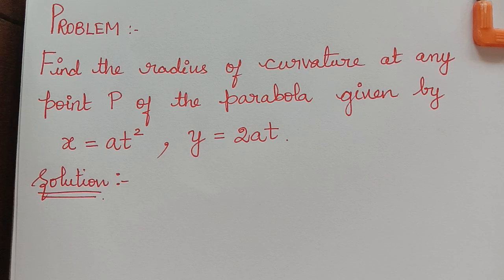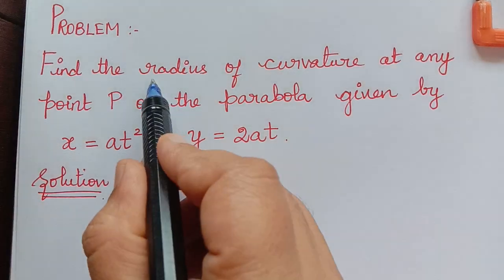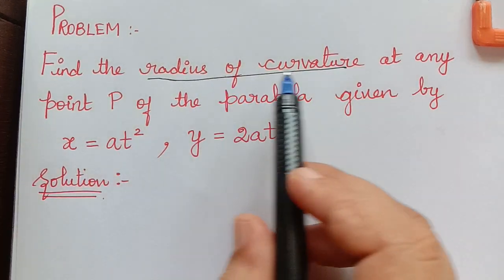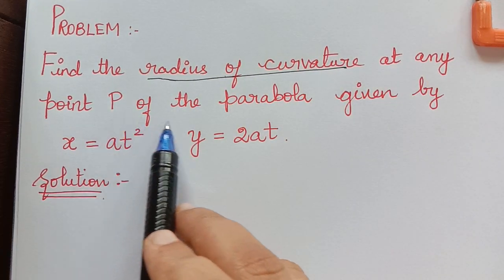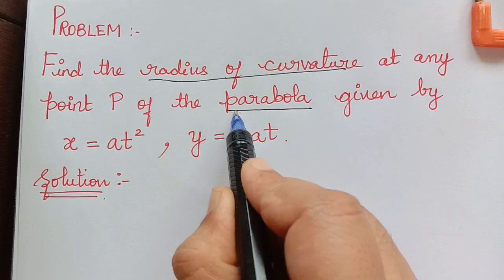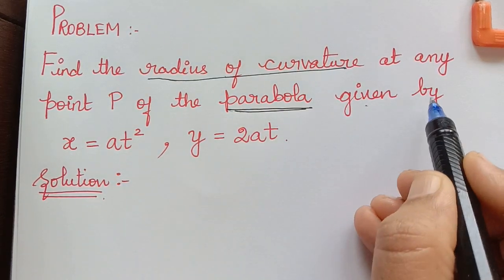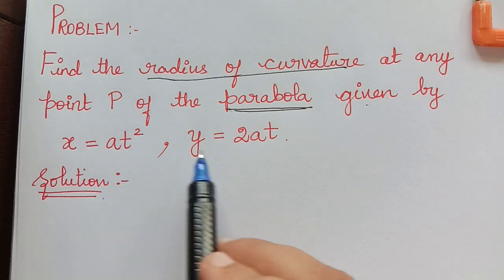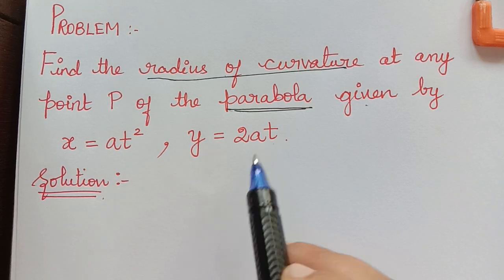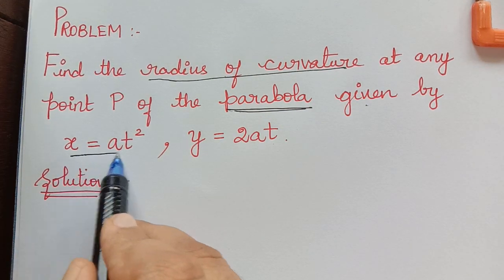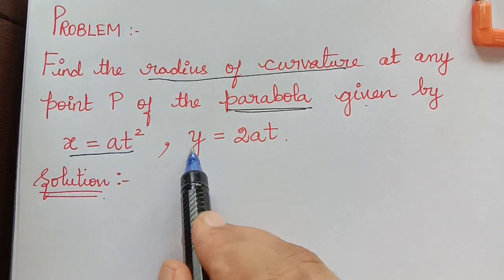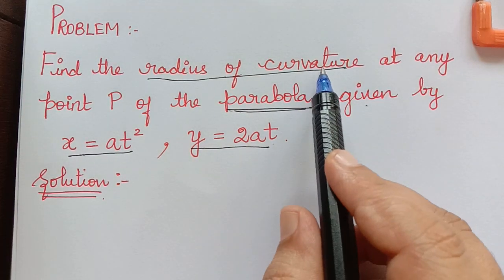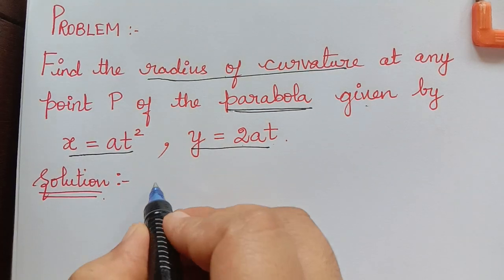Dear students, under the topic radius of curvature, here we have been asked to find the radius of curvature at any point P of the parabola given by its parametric equations x equals at squared and y equals 2at. The equation of the parabola is given in parametric form, and we have to find the radius of curvature for this.